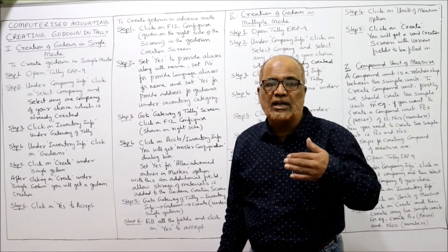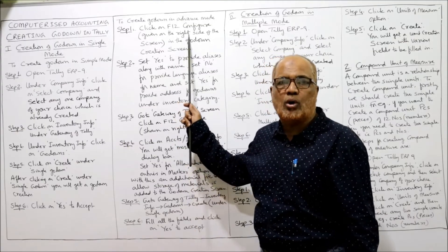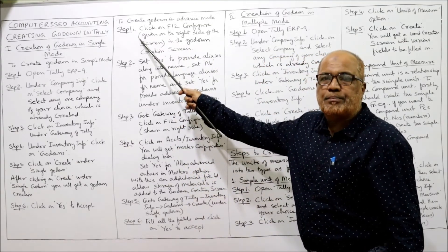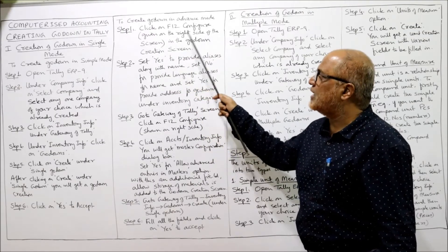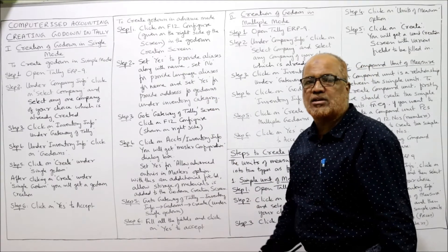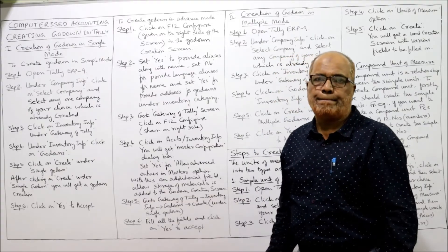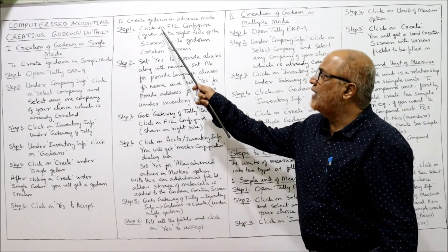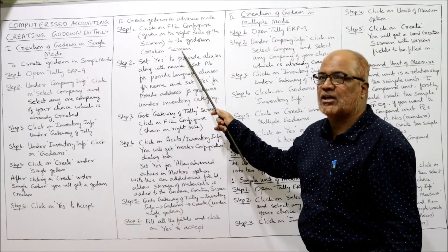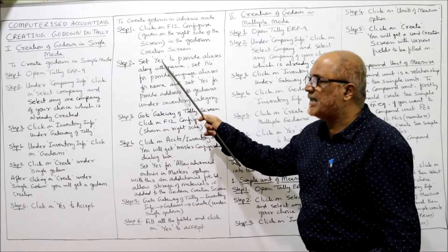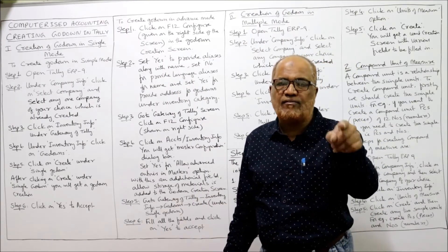Now I'm coming to create the godown in advanced mode. Advanced mode has some additional fields — additional inventory information can be generated. Step 1: In the Godown Creation screen, click F12 Configuration, which is given on the extreme right-hand side of the screen, in order to enable advanced options.